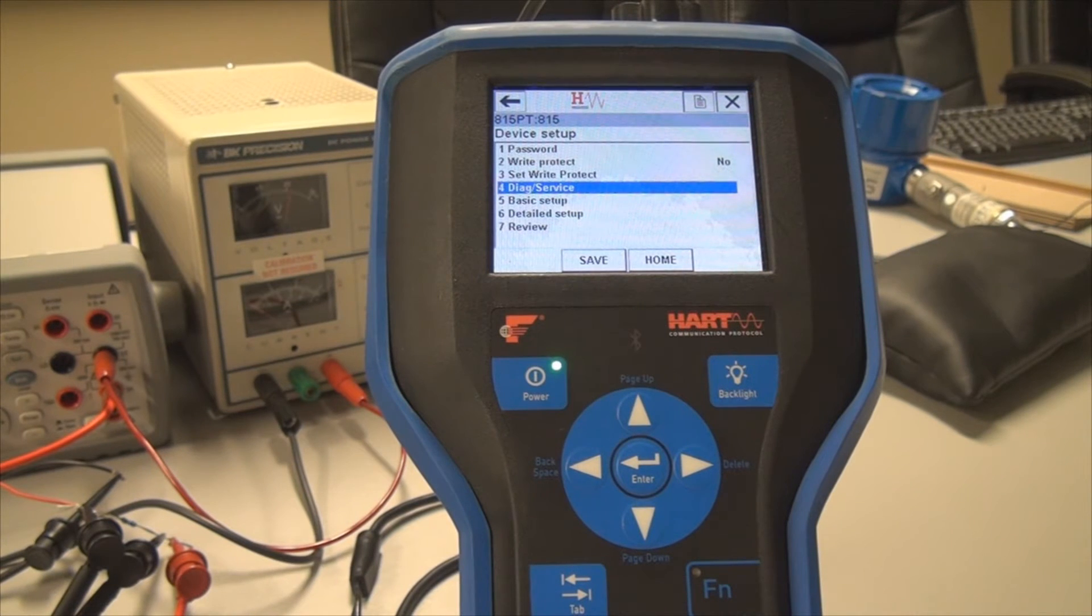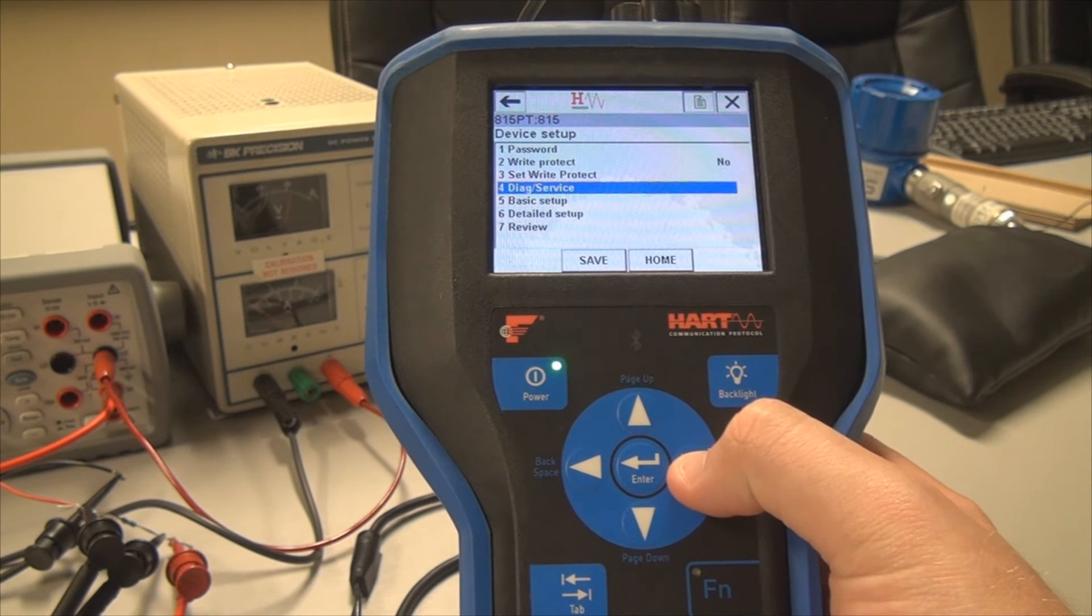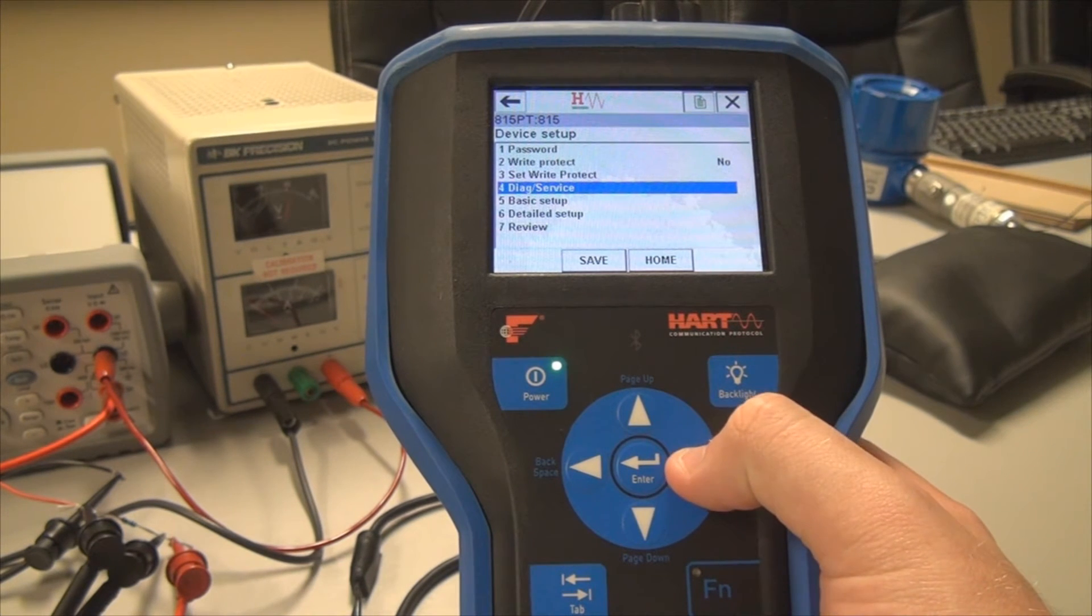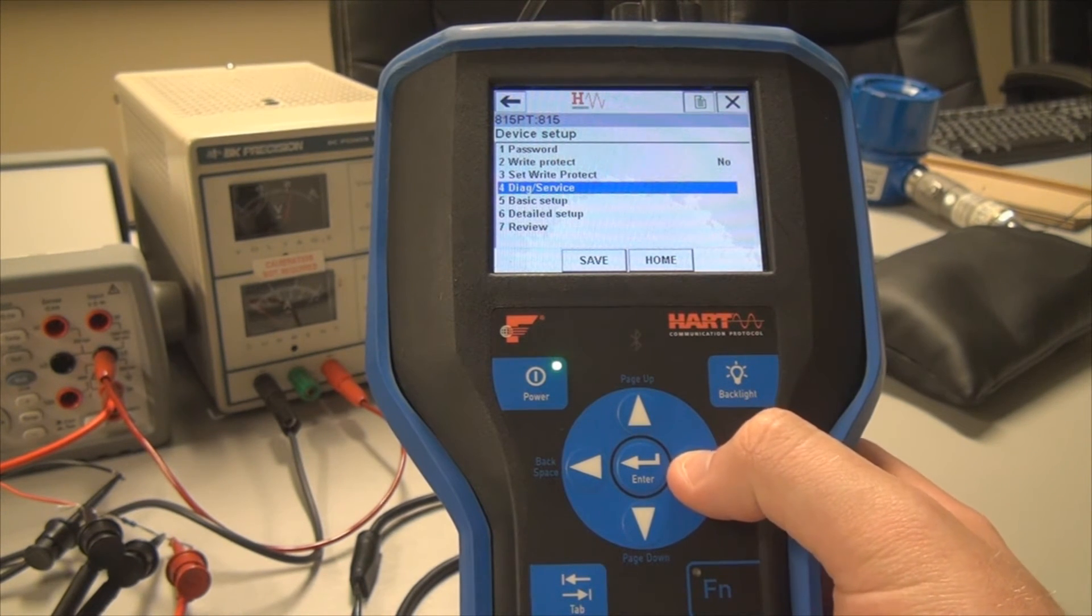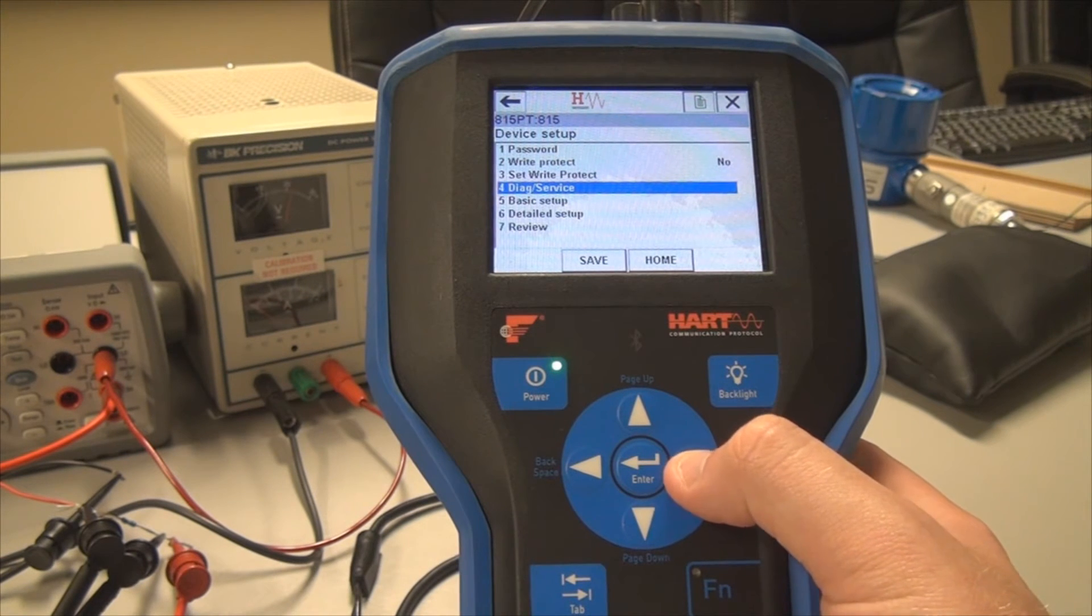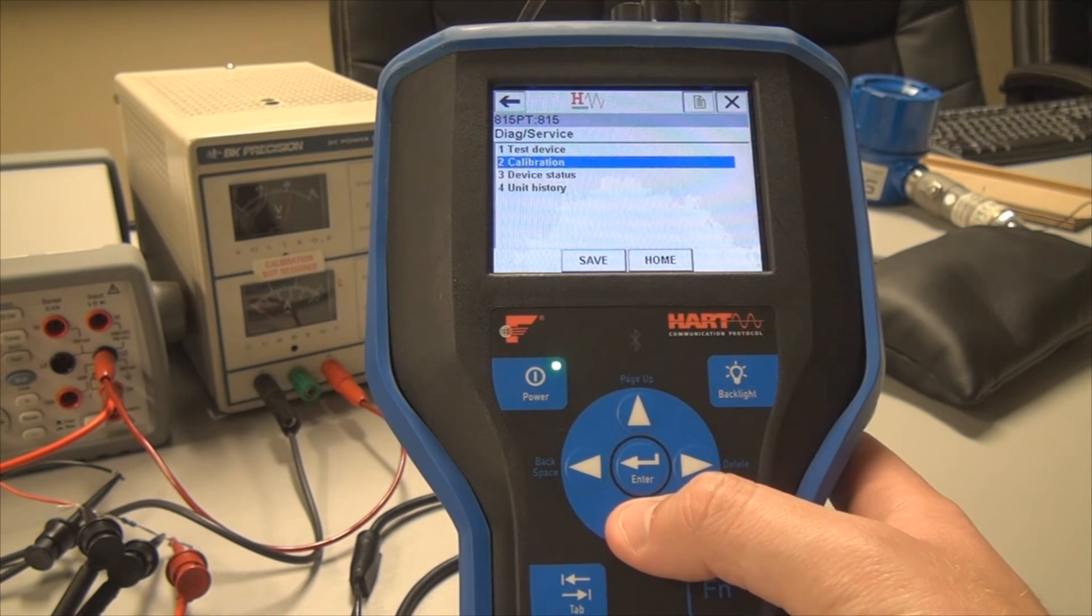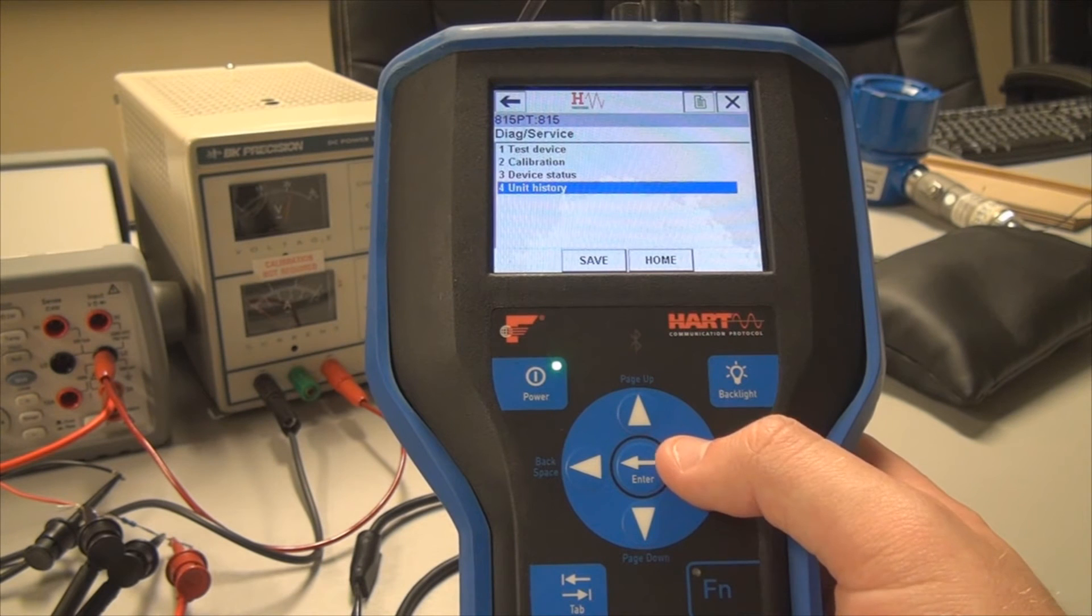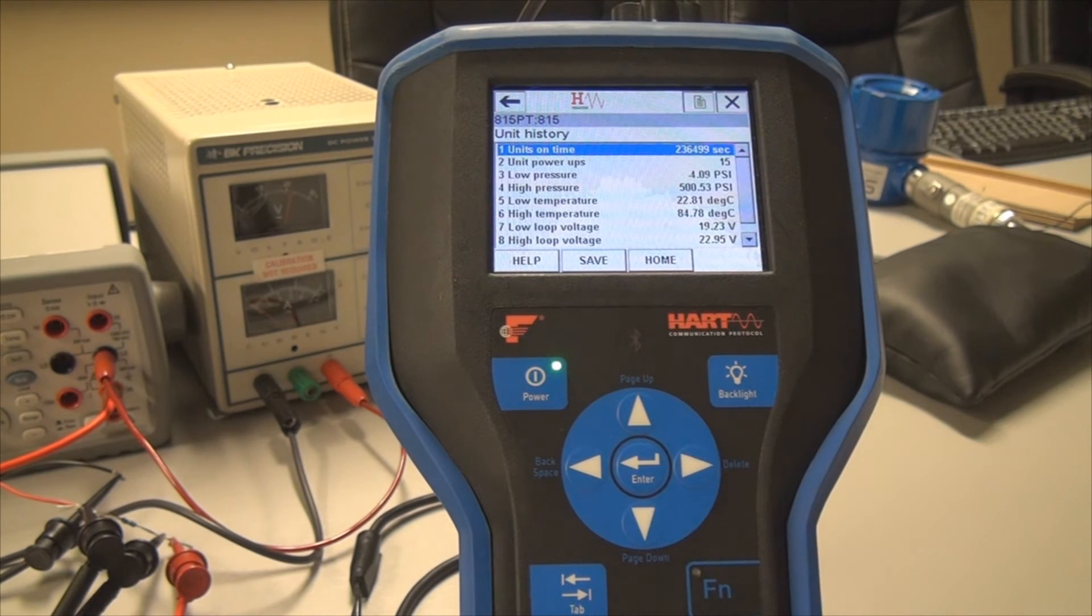Another cool thing that the 815 offers is history data. So if you go into number four diagnostic service, you can go down here to number four unit history. And it'll tell you a variety of different things about this unit, about the history, like units of time.